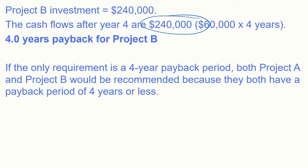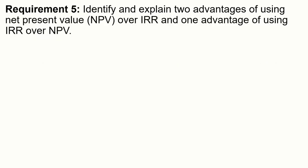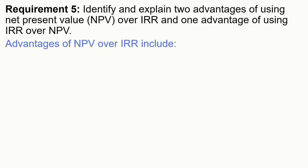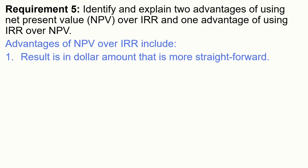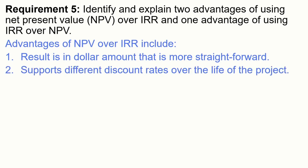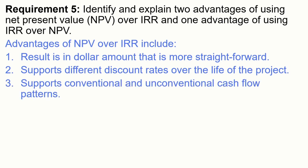Requirement five: identify and explain two advantages of using net present value over IRR and one advantage of IRR over NPV. Advantages of NPV over IRR include: first, NPV results in a dollar amount, which is more straightforward — easier to understand than an interest rate. Second, NPV supports different discount rates over the life of the project. A third advantage is that NPV supports both conventional and unconventional cash flow patterns, though only two are required.